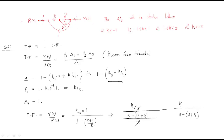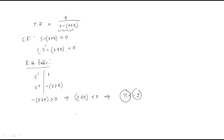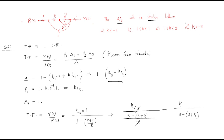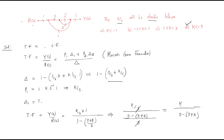For the system to be stable, all first-column coefficients must be positive. The s¹ coefficient 1 is already positive. For s⁰: -(3 + k) must be greater than 0... working through the algebra: -3 + k > 0... actually the condition yields k < -3. When k < -3, the system is stable.